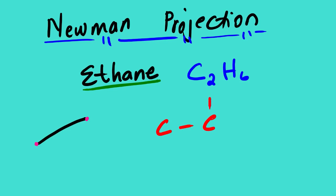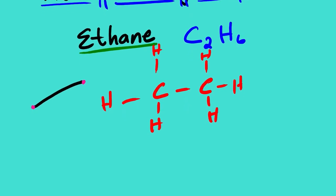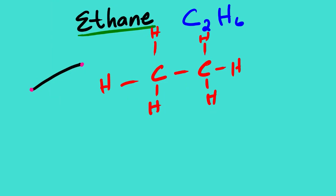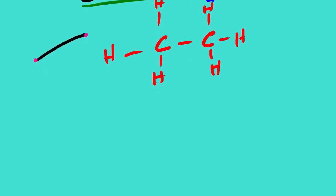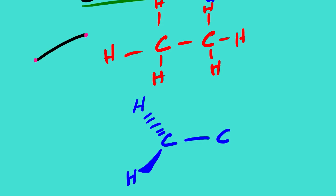The Lewis dot diagram is actually like this, where we have six hydrogens. Now, suppose we have our carbon - let us use a perspective view. We are trying to represent this structural formula using a three-dimensional view.